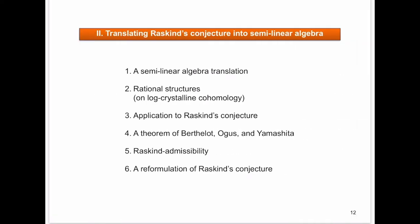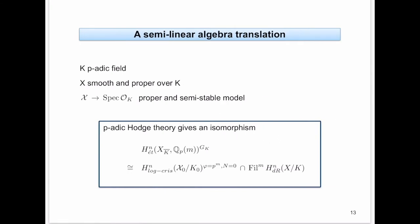We now take a closer look at Raskind's conjecture and translate it into semi-linear algebra — specifically, the language of filtered phi-N modules. We start with a p-adic field K, a smooth and proper variety admitting a proper semi-stable model: a proper flat morphism whose special fiber is a simple normal crossing divisor.